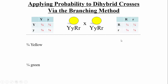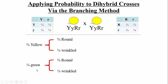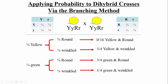Now comes the branching: of the three-quarters that are yellow, three-quarters of those will be round — yellow and round. Of the three-quarters that are yellow, one-quarter will be wrinkled — yellow and wrinkled. We do the same for the one-quarter that are green: three-quarters round, one-quarter wrinkled. Extending the branches with multiplication — three-quarters times three-quarters equals nine-sixteenths for yellow and round — we recover the same 9:3:3:1 ratio.